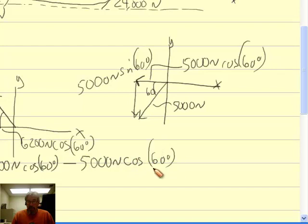Minus 5,000 newtons times the cosine of, again, 60 degrees. Well, I can do some calculations here and figure out what that is, and 18,400 newtons.